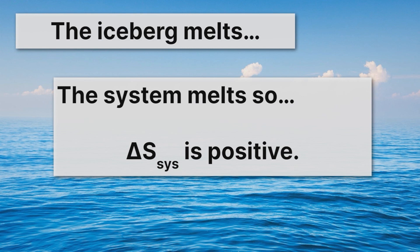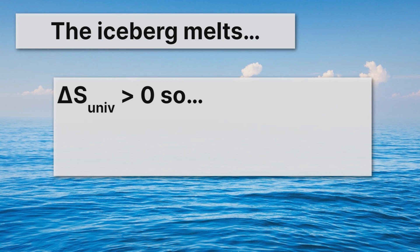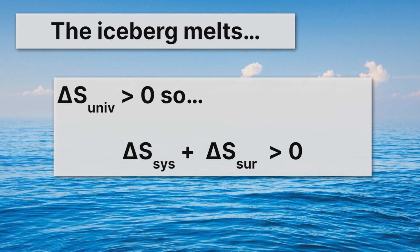So even though one of those is negative and one of those is positive, they can offset so that delta S of the universe is still greater than zero. When we add together the entropy change of the system and the entropy change of the surroundings, it has to be greater than zero.